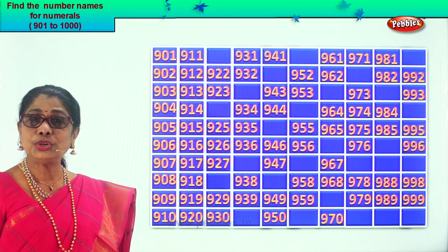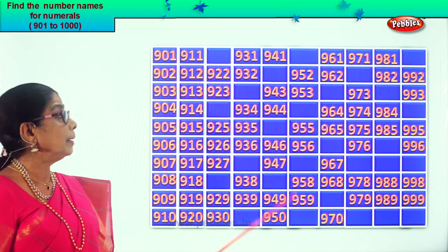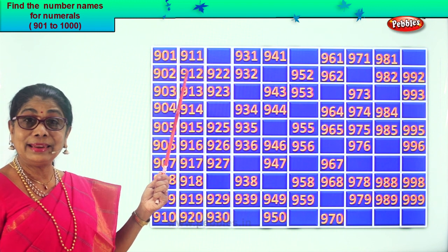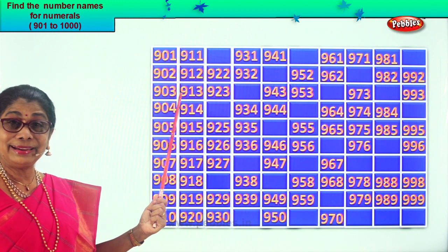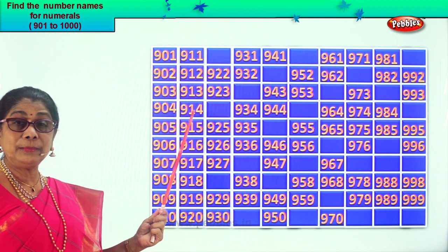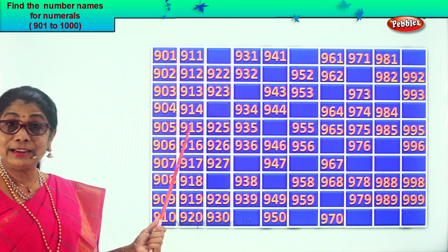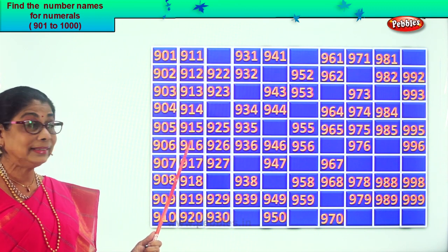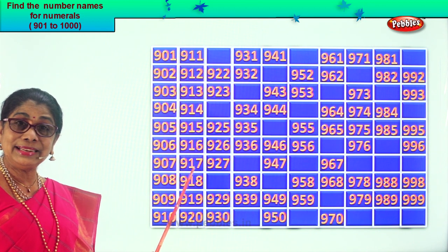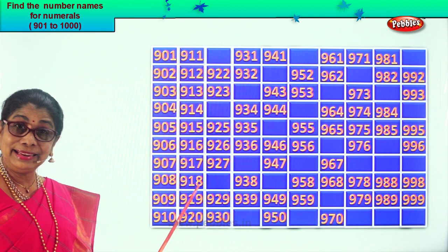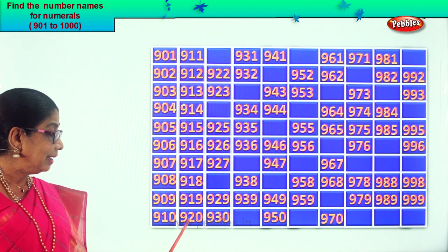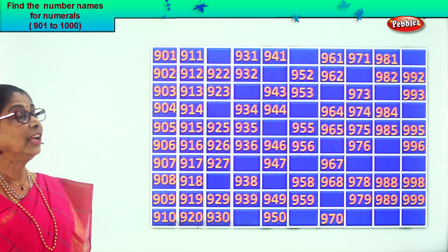Let's say aloud together: 911, 912, 913, 914, 915, 916, 917, 918, 919, 920.